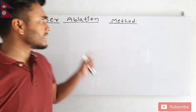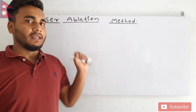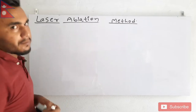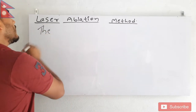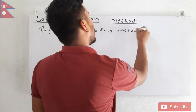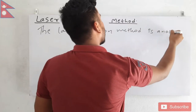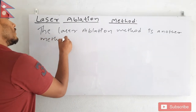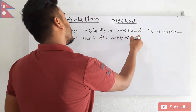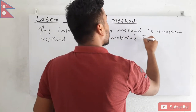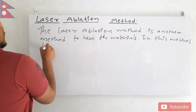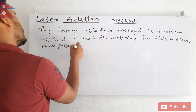First of all, let's understand what laser ablation method actually is, then we will understand this by the diagram of it. As the word suggests, in this method we use laser beams. The laser ablation method is another method to heat the material, and in this method laser pulses are used.